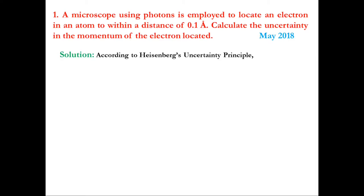According to Heisenberg's uncertainty principle, it is impossible to measure both position and momentum of a particle simultaneously with arbitrary precision, and the product of the uncertainties in position and momentum is always greater than or equal to ħ/2. That is, Δx · Δpx ≥ ħ/2.